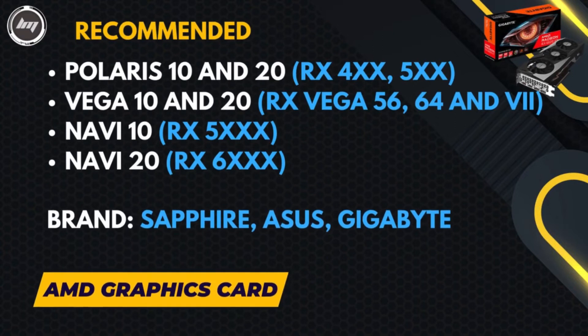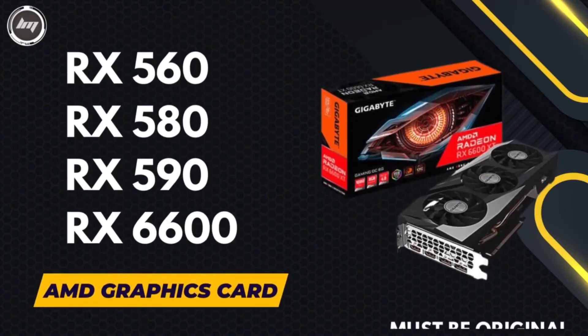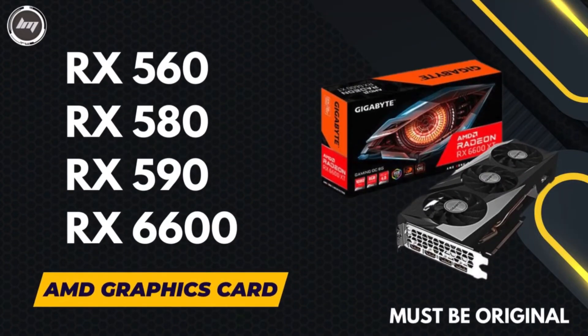Moving on to the graphics card, here are the most recommended ones that can run on your Hackintosh build: Polaris 10 and 20, Vega 10 and 20, Navi 10 and 20. Brands like Sapphire, Asus, and Gigabyte. Be sure that you're buying the original one since there are fakes on the market.